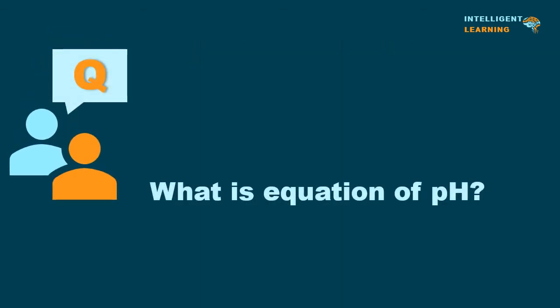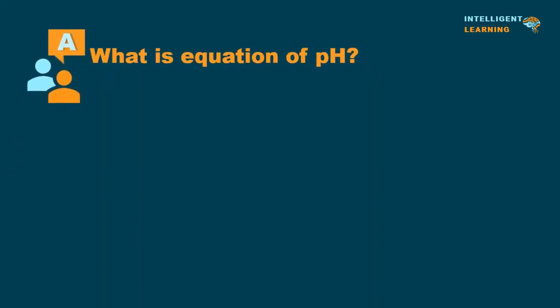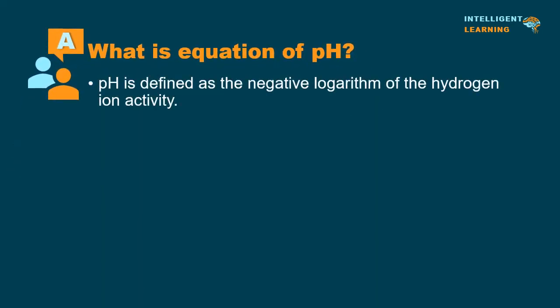What is the equation of pH? pH is defined as the negative logarithm of the hydrogen ion activity.